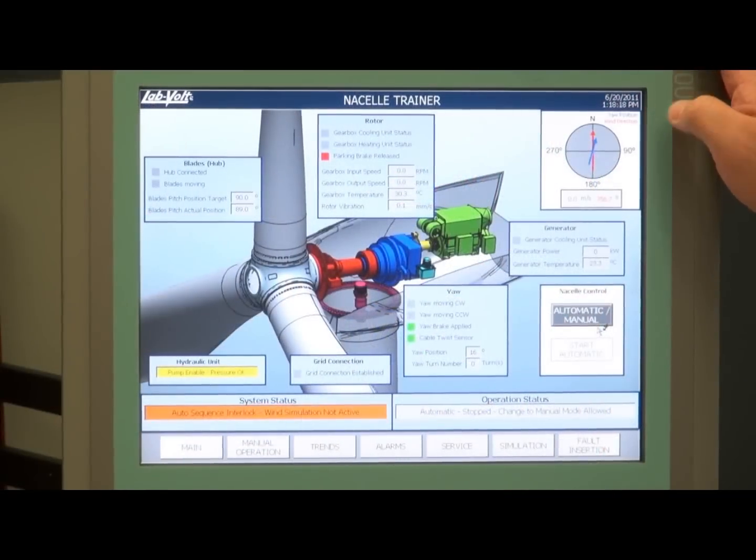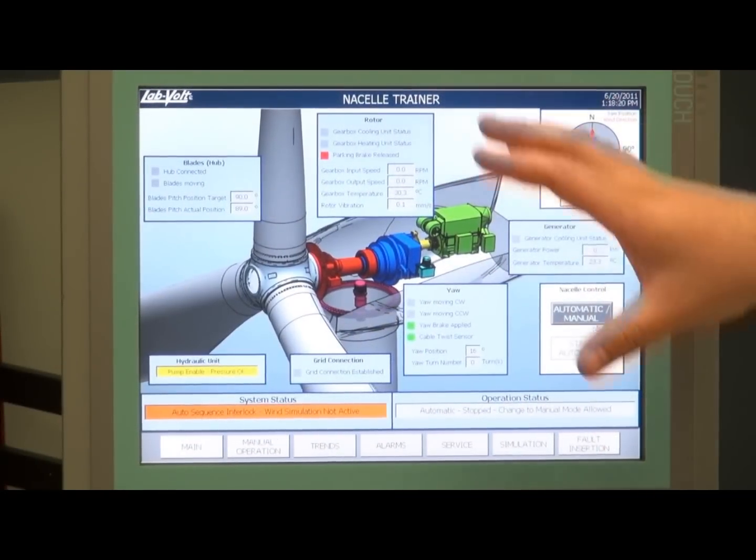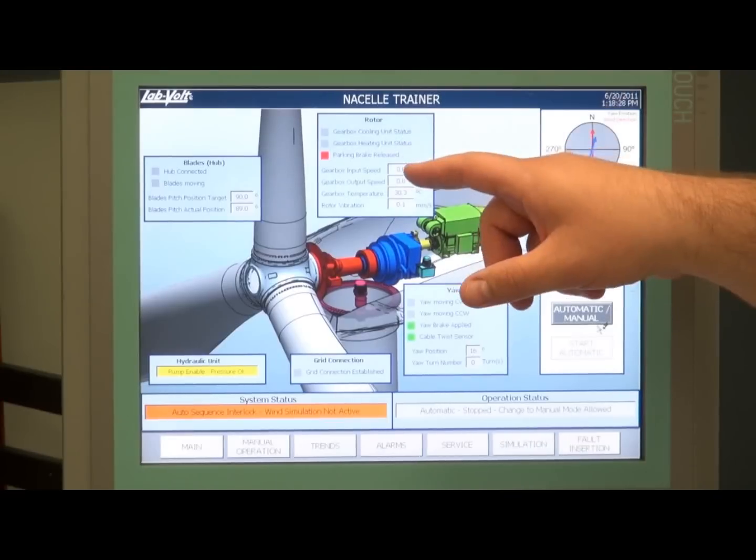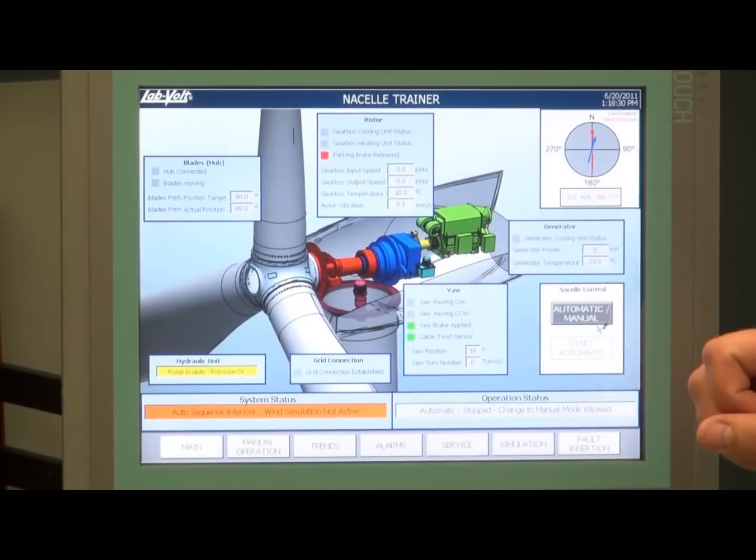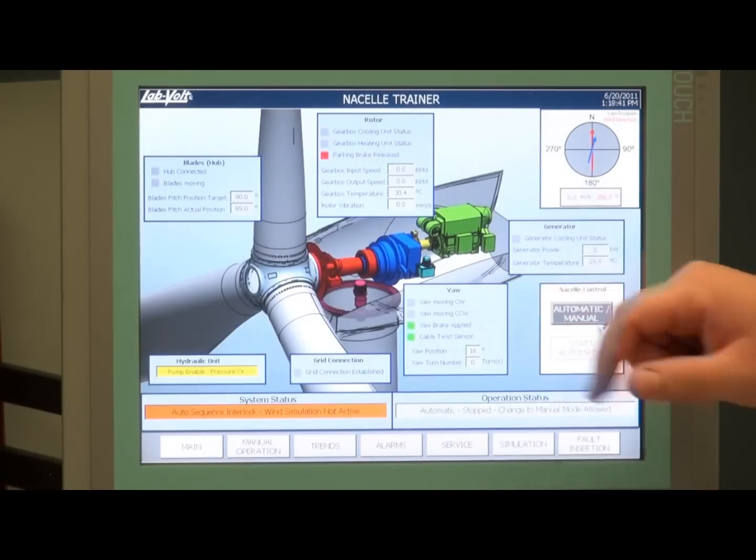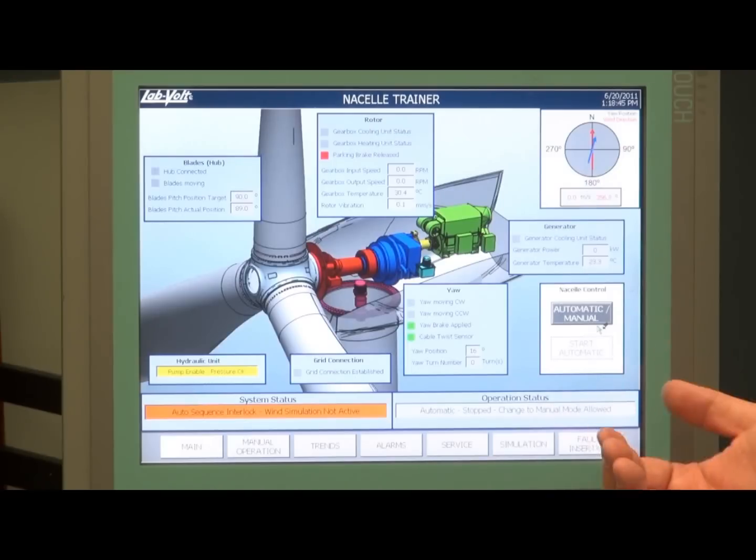The touch screen interface is a human-machine interface to control the whole nacelle training system. In the main window, you see the different parameters of the nacelle, like the rotor, the RPM on the low speed or the high speed side, the gearbox temperature, the vibration in the system, what the yaw is doing, moving clockwise or counterclockwise, and the brake, applied or not.